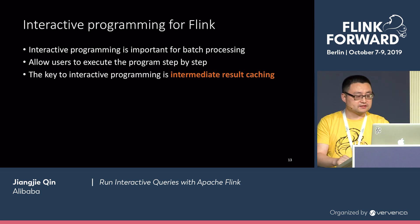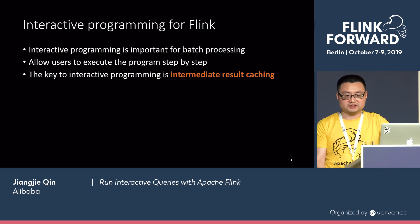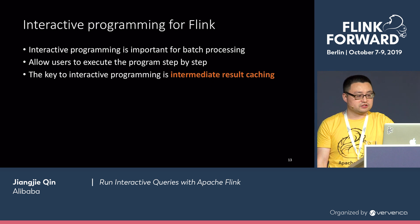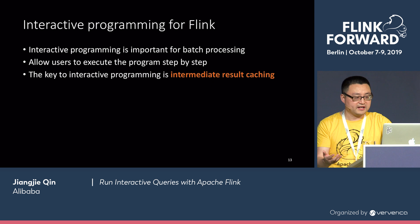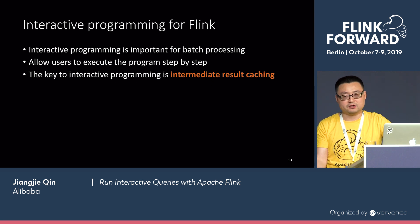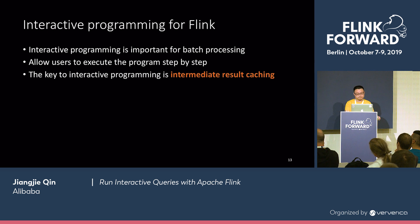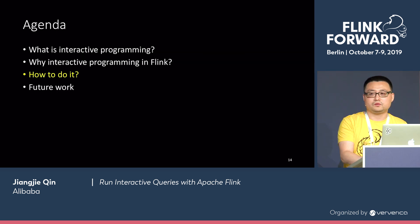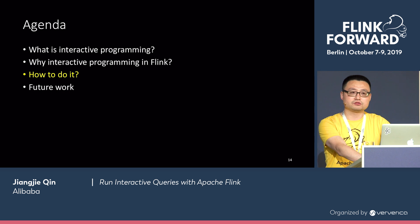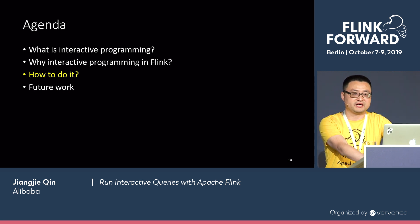As you can see, interactive programming is actually important for batch processing. The way it works is that we allow users to execute the program step by step without introducing recomputation all the time. The key to interactive programming at runtime is actually intermediate result caching. So the next question is: how exactly are we going to save the intermediate result and find it back when we try to use it later?